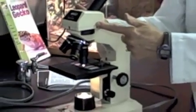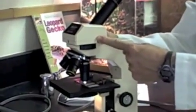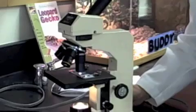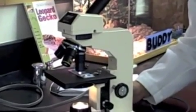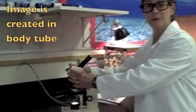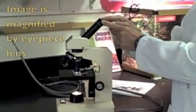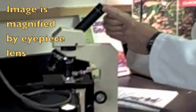Students, can you please locate the body tube on your microscopes. So now we have an image that's created in the body tube. That image gets magnified by this lens called the eyepiece lens.